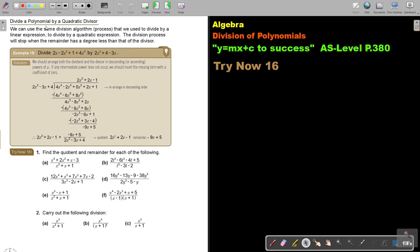Divide a polynomial by a quadratic divisor. We can use the same division algorithm process that we use to divide by a linear expression to divide by a quadratic expression. The division process will stop when the remainder has a degree less than one of the divisors. But let's explain it by using this example. So divide this by this. We should always arrange both the dividend and the divisor in descending or ascending powers of x. So either both descending or both ascending.